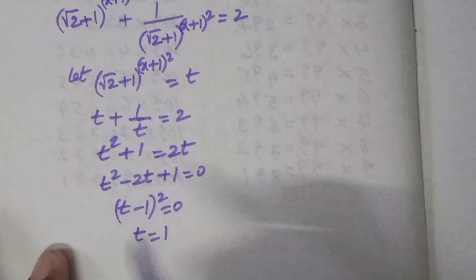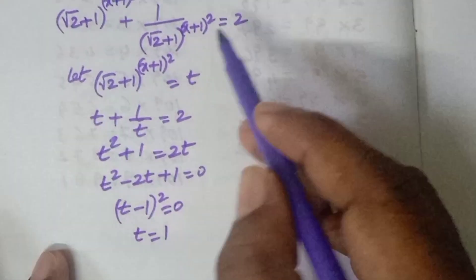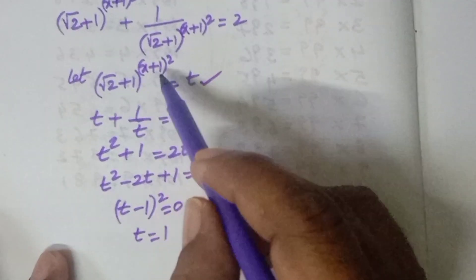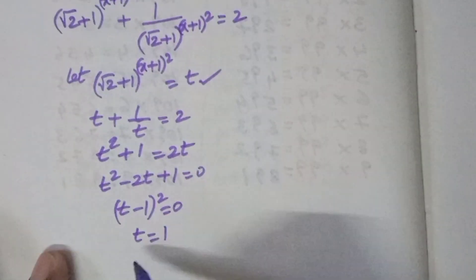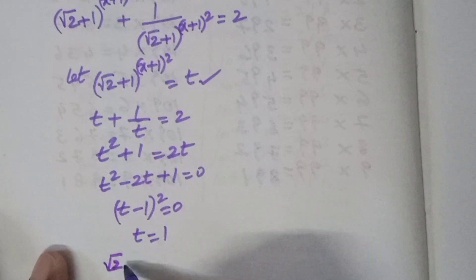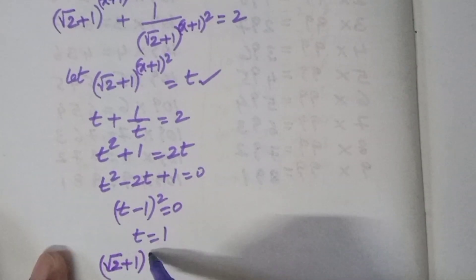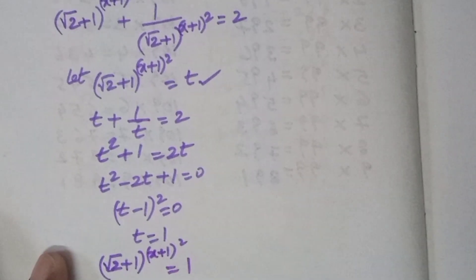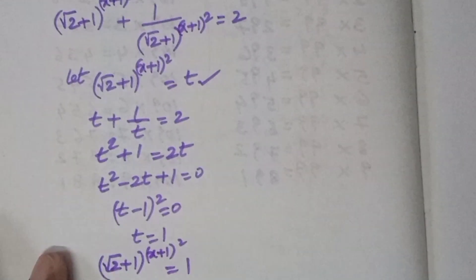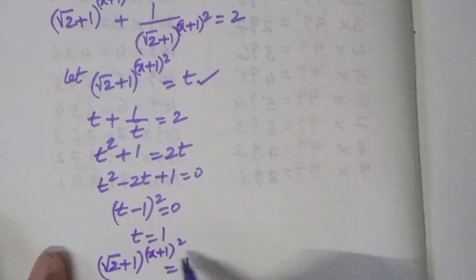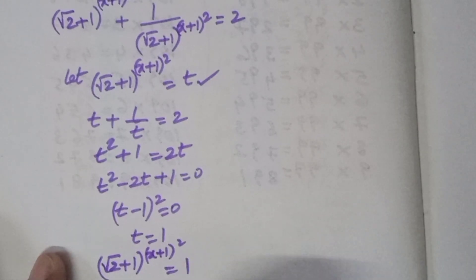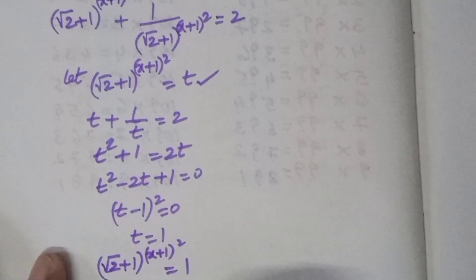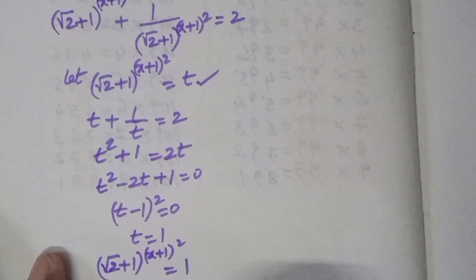Our t value is (√2+1)^((x+1)²) = 1. To make this equal to 1, the power must be 0. So (x+1)² = 0, which implies x = -1.